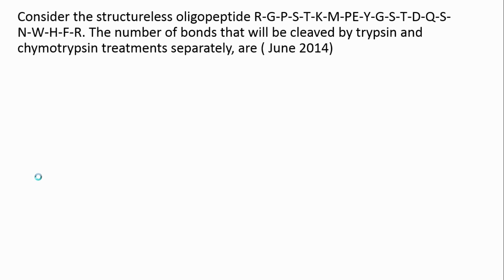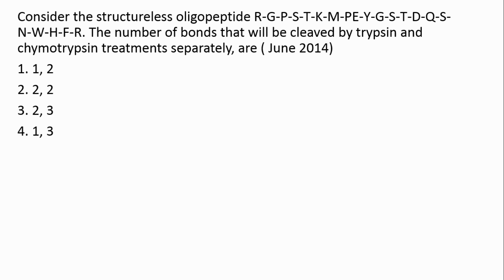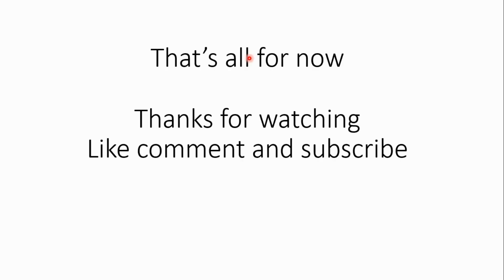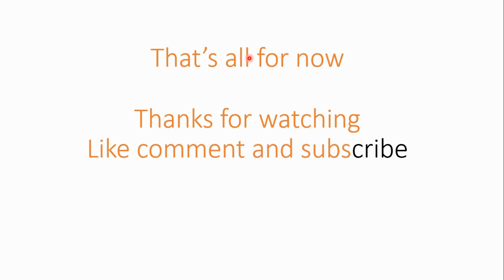Going back to the question — it asks for the number of bonds cleaved by trypsin and chymotrypsin treatment separately, not the fragments produced. The bonds cleaved by trypsin were 1, and by chymotrypsin were 2. Thanks for watching — if you liked the video, hit the like button, comment below, and subscribe if you're interested in more such videos.